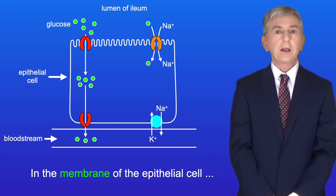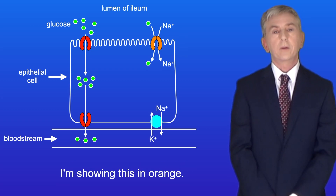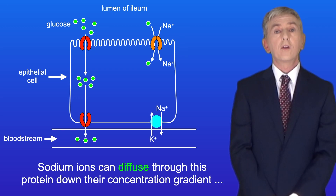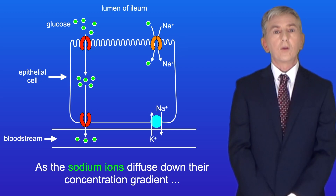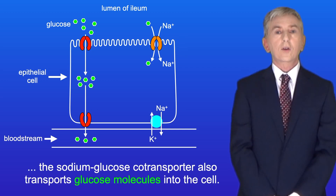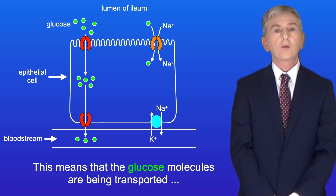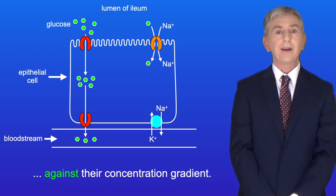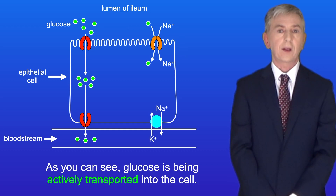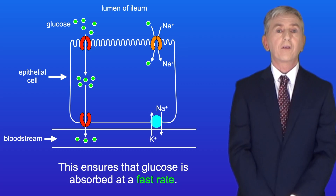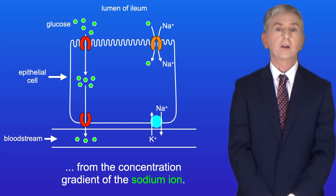In the membrane of the epithelial cell is a protein called the sodium-glucose co-transporter, shown here in orange. Sodium ions can diffuse through this protein down their concentration gradient into the epithelial cell. As the sodium ions diffuse down their concentration gradient, the sodium-glucose co-transporter also transports glucose molecules into the cell. This means that the glucose molecules are being transported against their concentration gradient — so glucose is being actively transported into the cell, ensuring it is absorbed at a fast rate. The energy for this glucose transport comes indirectly from the concentration gradient of the sodium ion.